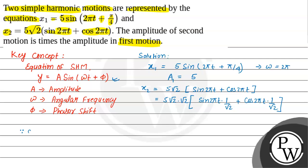We know that sin(π/4) equals cos(π/4) equals 1/√2. So multiplying through by √2 gives us 10, and we can write sin 2πt × cos(π/4) plus cos 2πt × sin(π/4). We write 1/√2 as sin(π/4) and cos(π/4) respectively, so that we can get the equation in the required standard form.